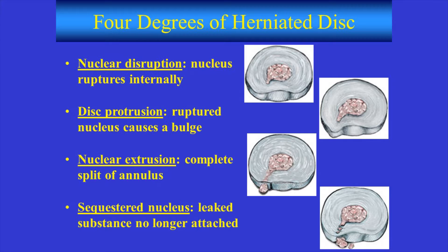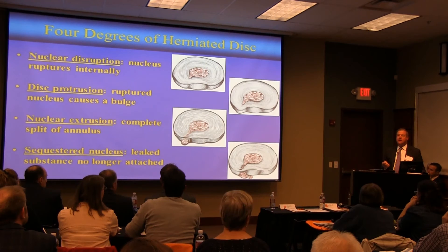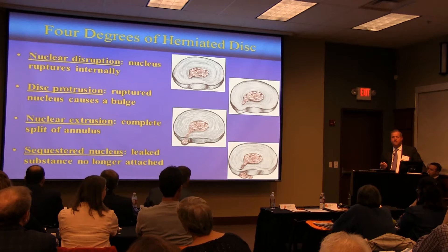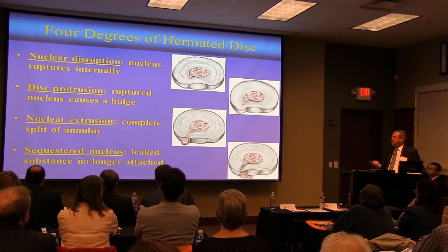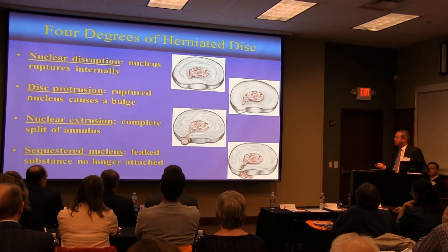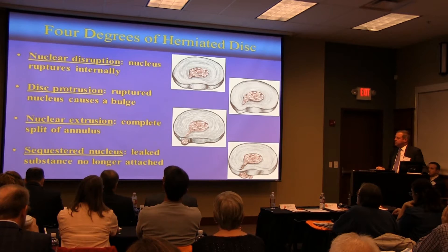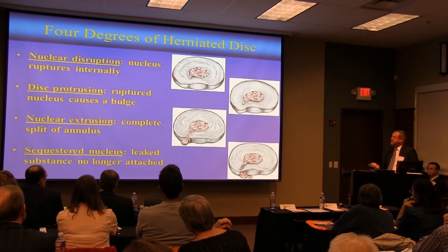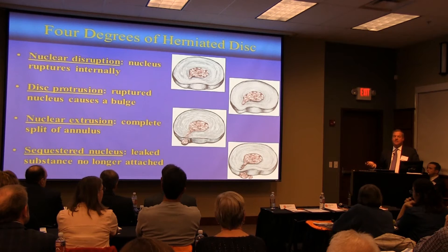When we talk about disc herniations, patients always ask: do I have a disc bulge or a herniation? This is a good framework. Nuclear disruption is where the nucleus is not contained but there's no real impingement on neural elements — this is degenerative disc disease, the shock absorber wearing out. A protruded disc is where part of the disc actually impinges or pushes on a nerve. An extruded fragment is where part of the annulus comes out. A sequestered fragment is where part of the nucleus exits and loses its attachment to the annulus. This framework is easy for patients and physicians to understand.